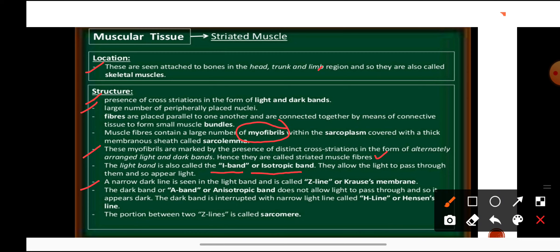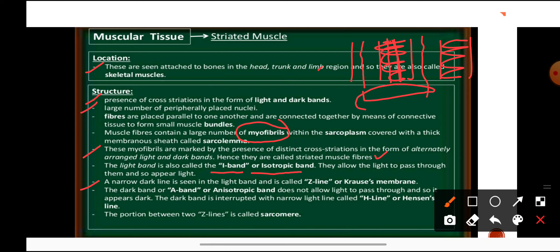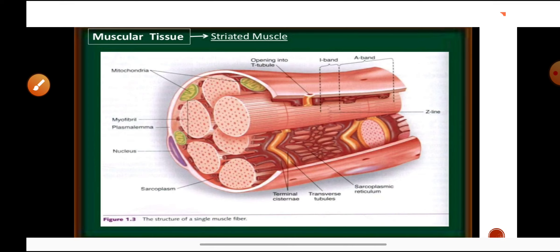Within the light band, a narrow dark line is present, known as the Z line or cross membrane. Similarly, within the dark band, there is a small light zone known as the Henson zone or H line. The distance between two Z lines is known as the sarcomere, which is the functional unit of contraction.